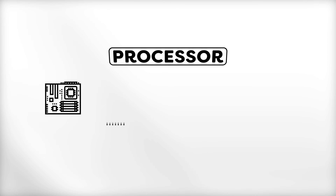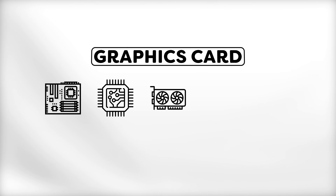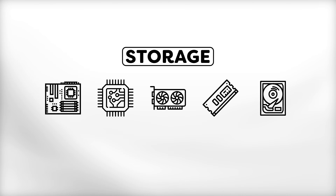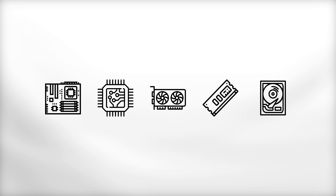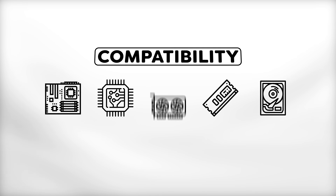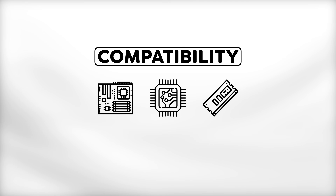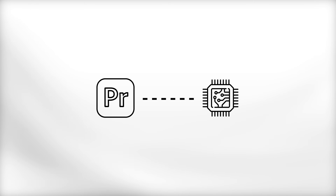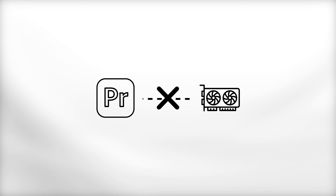The most important components in a computer are the motherboard, the processor, the graphics card, memory, and storage. The motherboard, processor, and memory all need to be compatible with each other. The processor is probably the most important piece in your entire workstation, so we'll first look for a CPU and then find a compatible motherboard. Adobe Premiere Pro uses your processor the most — it's a common misconception that video editing relies heavily on your video card.